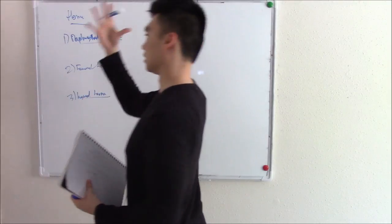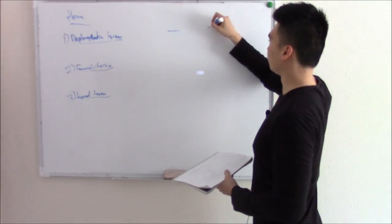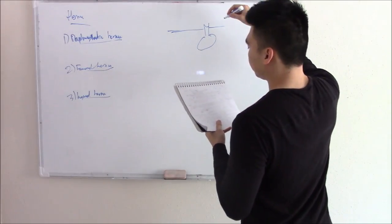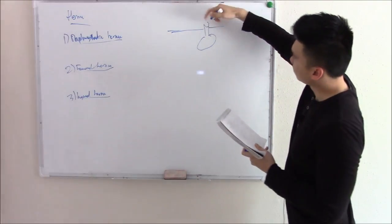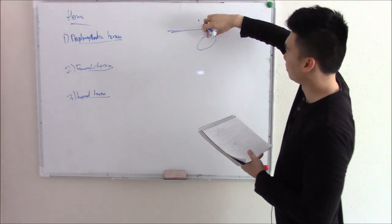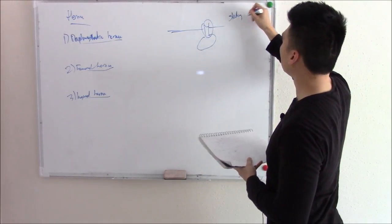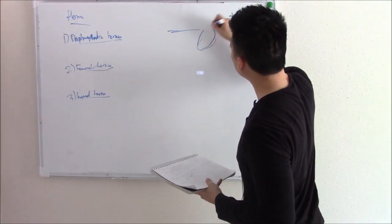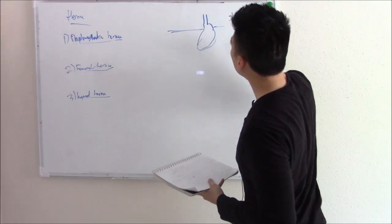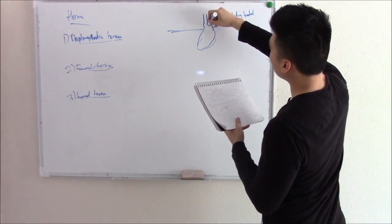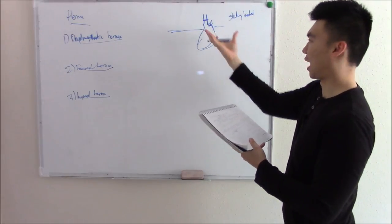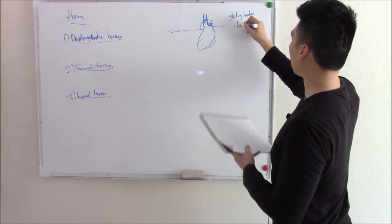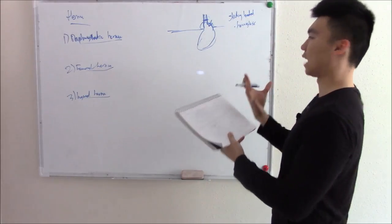Those are our three types of hernias. Let's talk about the diaphragmatic hernia first. Your esophagus goes through the diaphragm and here's your stomach. Sometimes this esophagus and the top part of your stomach can move up, slide up — we call this a sliding hiatal hernia. Now the cardioesophageal junction is a little bit raised, and sometimes if you look on imaging it'll look like an hourglass. That is a sliding diaphragmatic hernia.